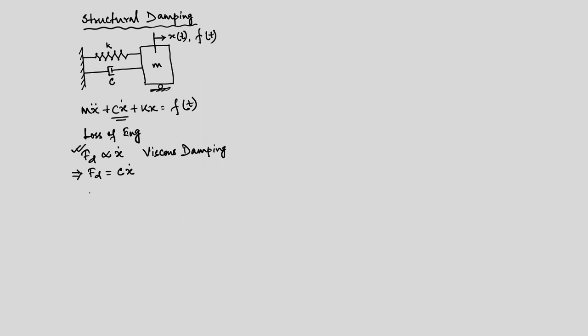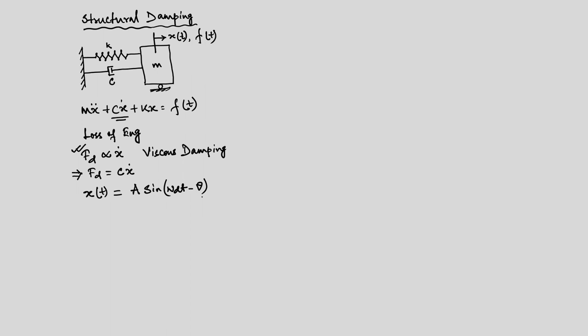Let us assume that the displacement x of t is a sinusoid: x(t) = A sin(ωd·t − θ). Then x dot of t is A·ωd·cos(ωd·t − θ), and dx is nothing but x dot·dt.